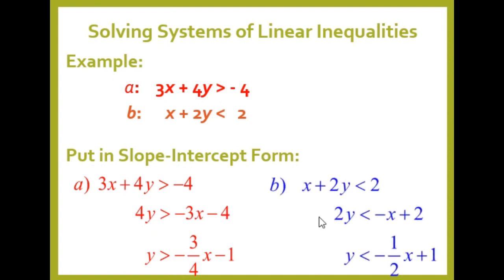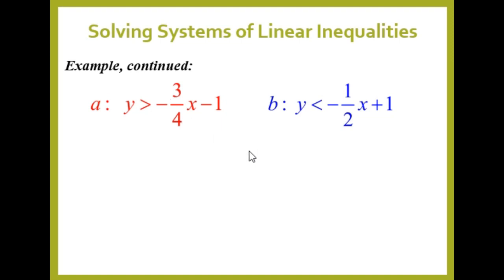For the second inequality, x + 2y < 2. We need to isolate y and transpose x to the right side: 2y < −x + 2. Dividing both sides by 2 gives y < −(1/2)x + 1. Here are the two slope-intercept forms of our given inequalities.